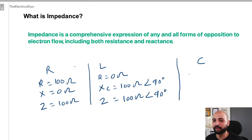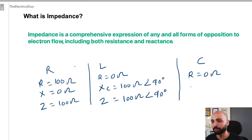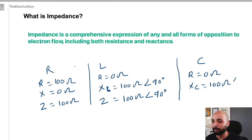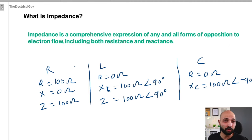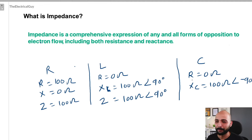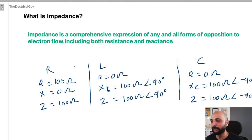Similarly, for a capacitive circuit, a perfect capacitor has zero resistance and offers capacitive reactance XC — let's say 100 ohms. However, the angle between voltage and current is negative 90 degrees, because in a capacitive circuit voltage lags behind the current by 90 degrees. You can refer to this as an impedance of 100 ohms at an angle of negative 90 degrees.